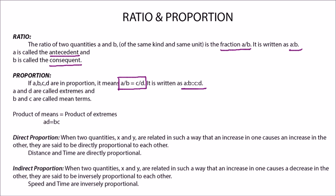A and D are called the extremes and B and C are the mean terms. The product of means equals product of extremes. AD is equal to BC.